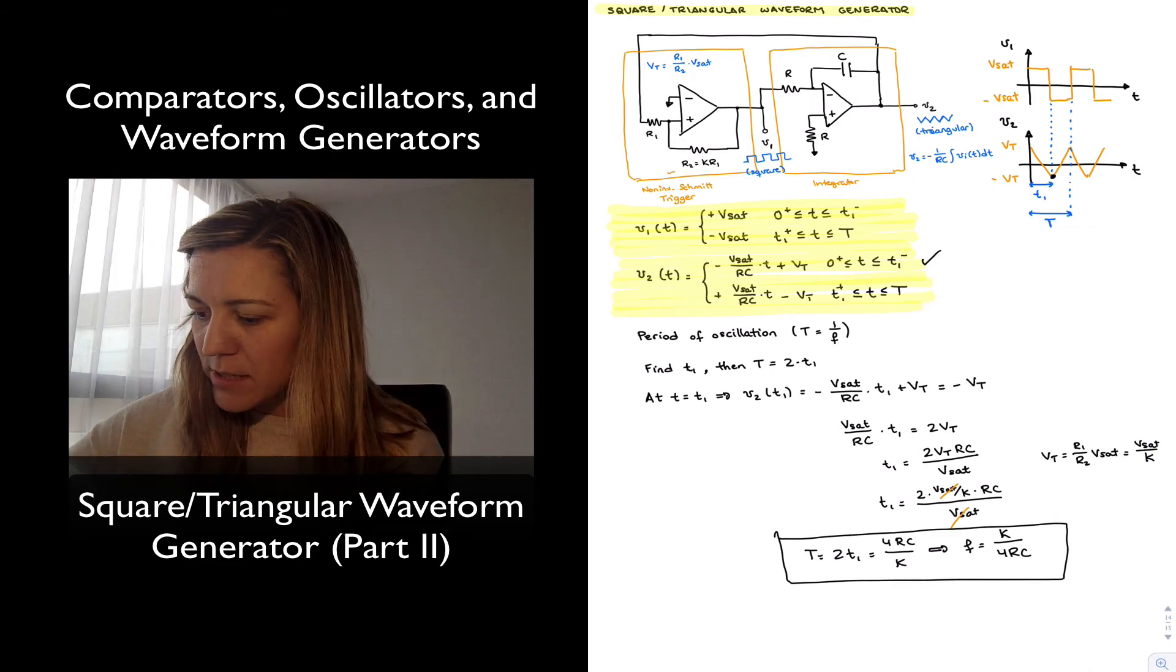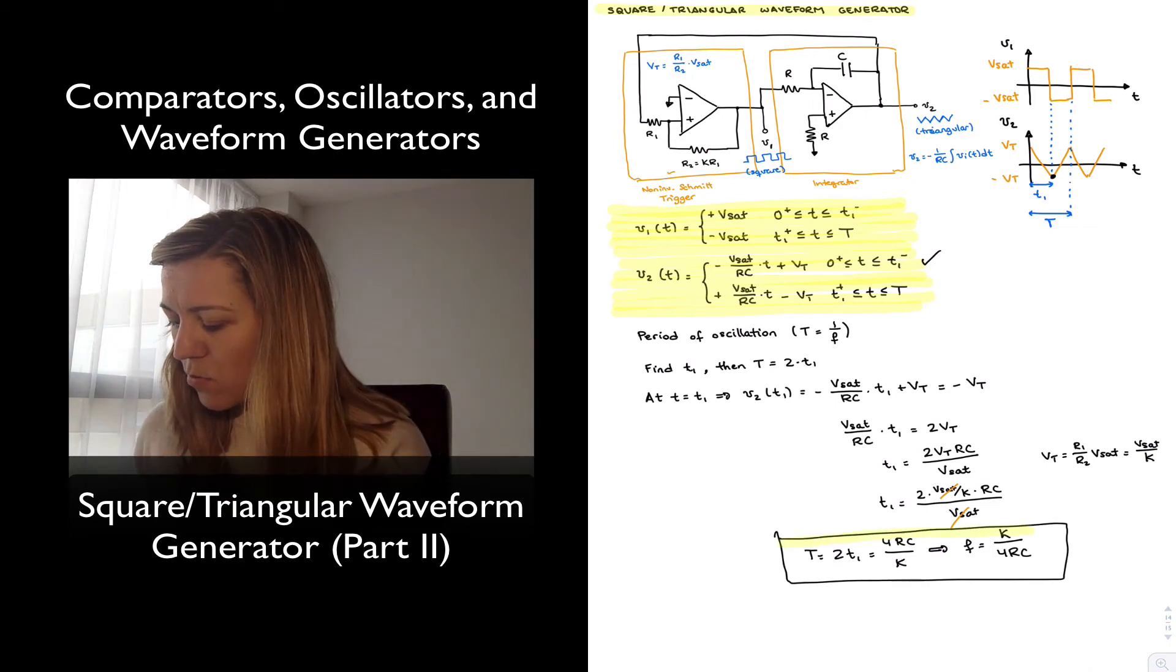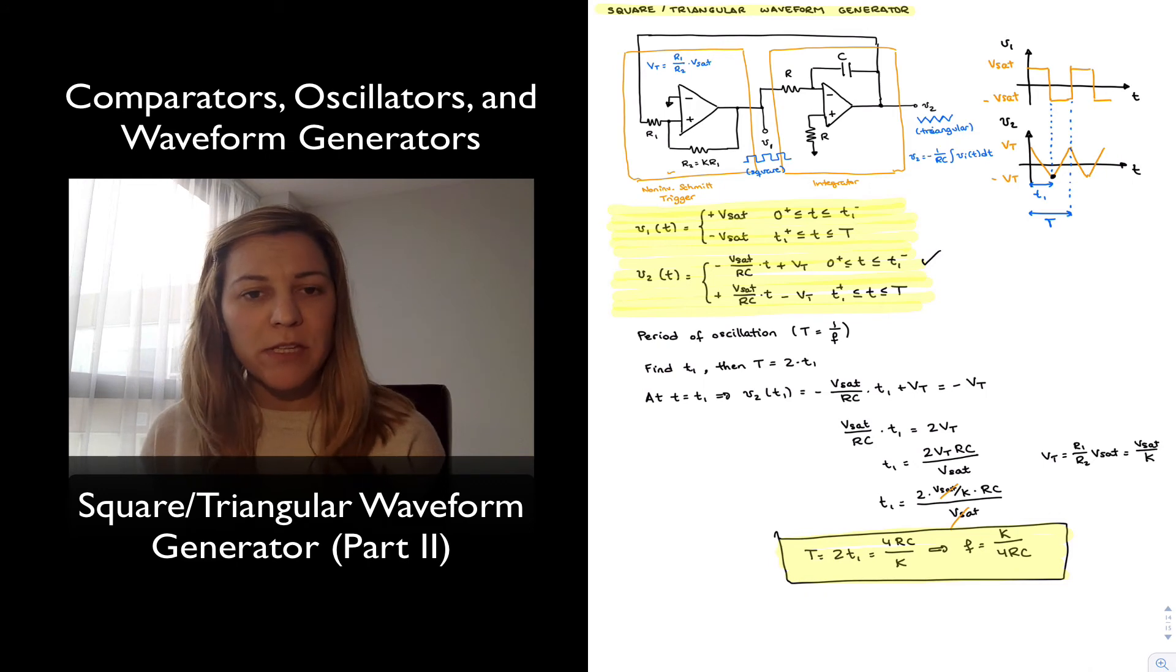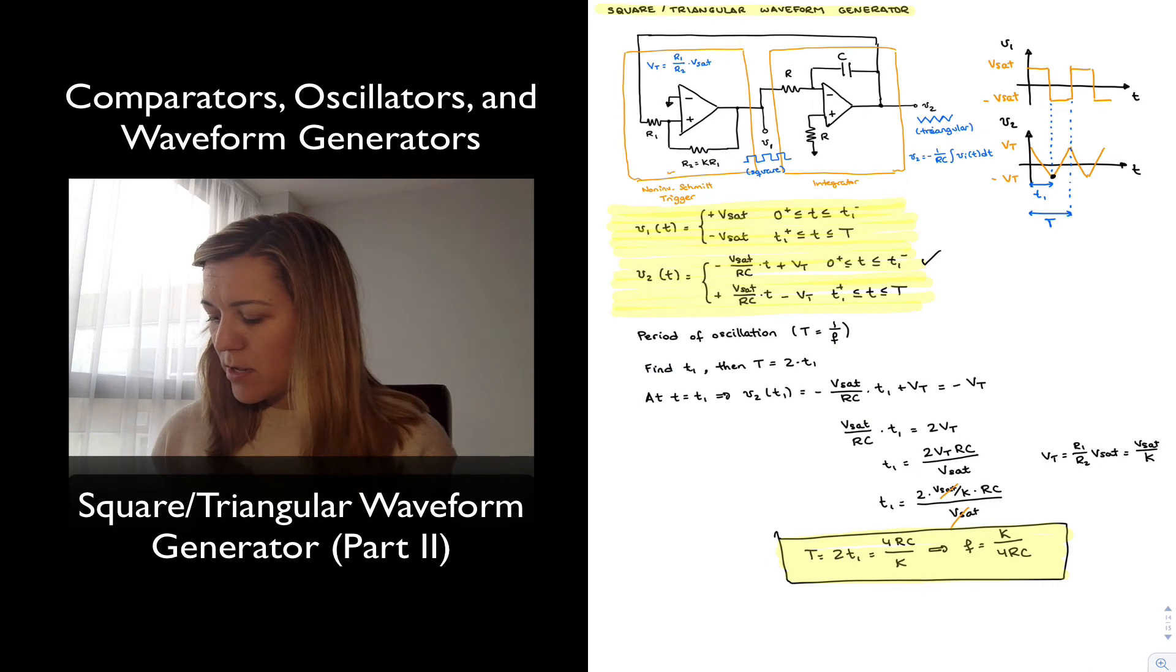And so basically what this tells us is that now we can use this circuit, and by selecting appropriate values for resistors and capacitor, we can generate a square wave or a triangular wave with a given amplitude and a given period, or given frequency of oscillation. There are a couple of design considerations that we need to keep in mind.